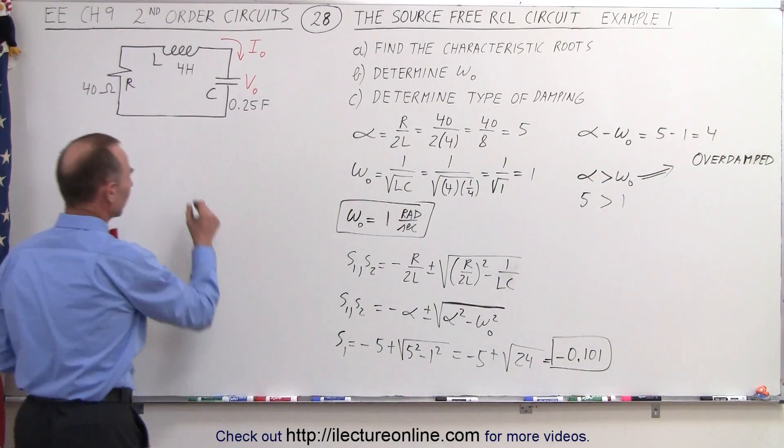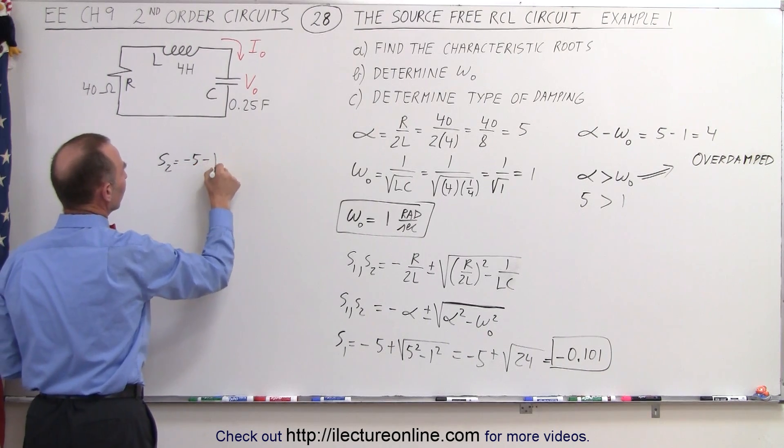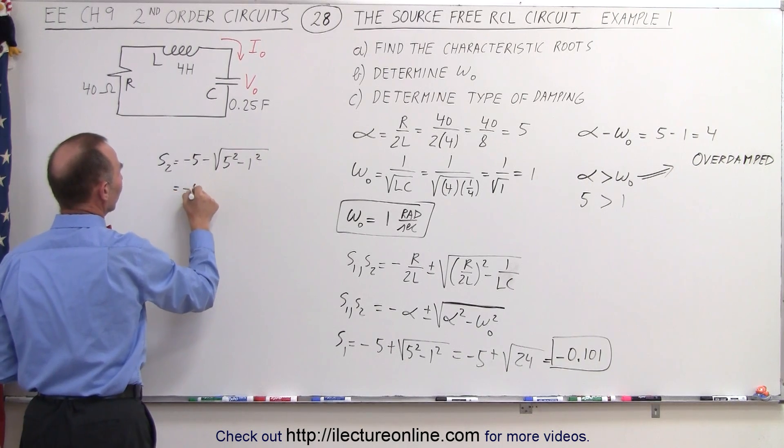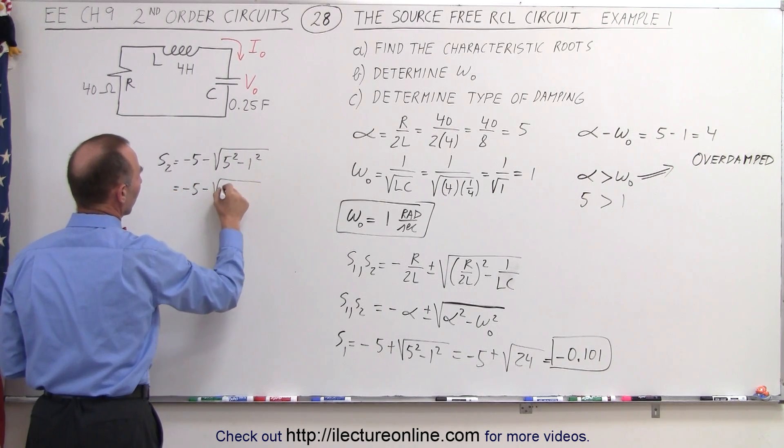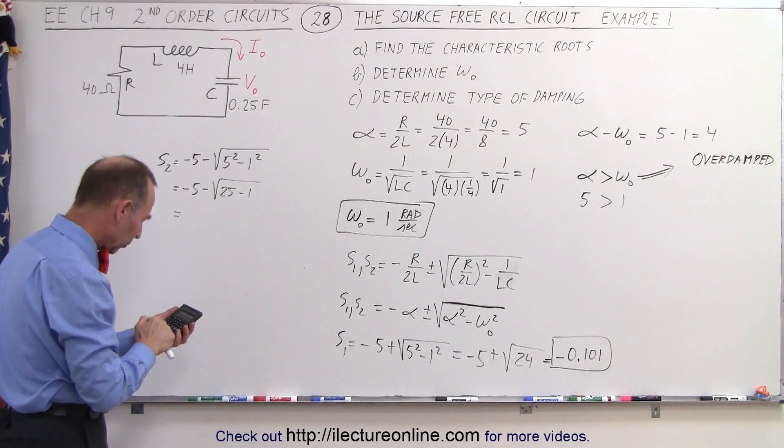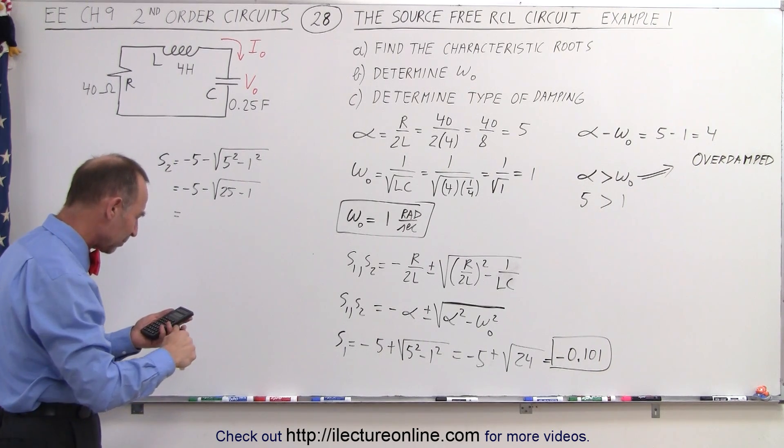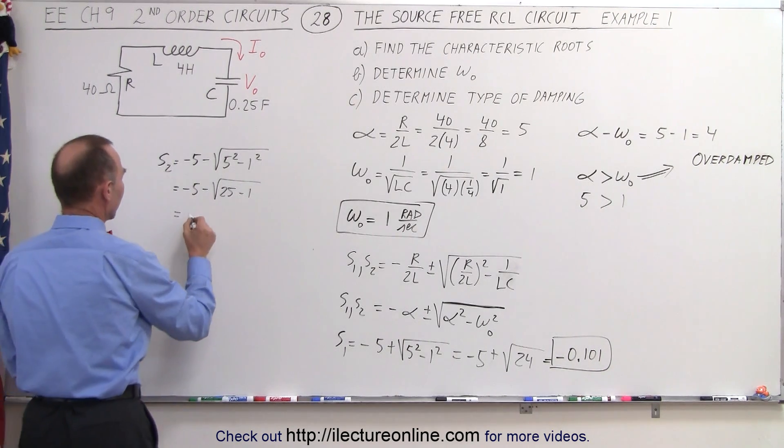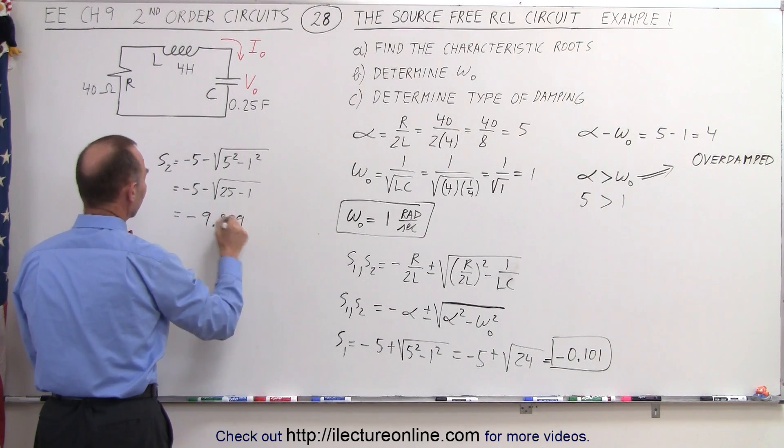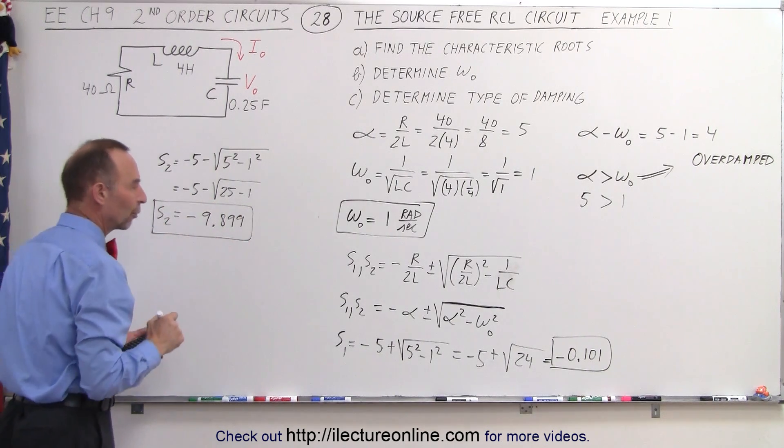Then trying for the second one, S2 would be equal to minus 5 minus the square root of 5 squared minus 1 squared, which is equal to minus 5 minus the square root of 25 minus 1. So we have 24, take the square root and subtract 5 from that, and we get minus 9.899, which is the second characteristic root which is of course what we're going to use to solve the equation.